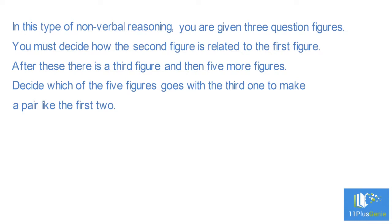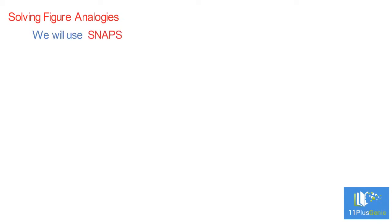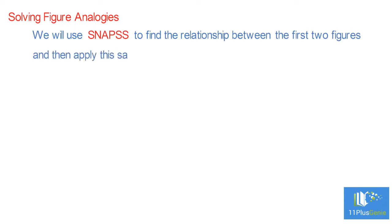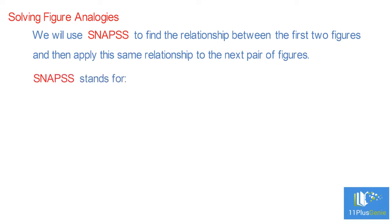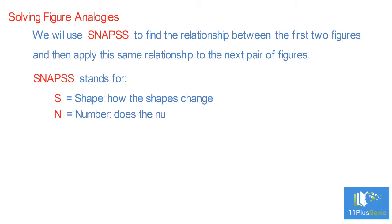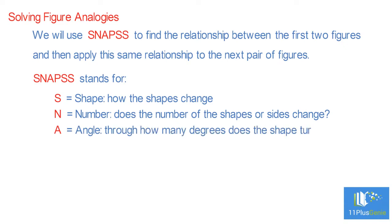To solve figure analogies, we will use SNAPS to find the relationship between the first two figures and then apply this relationship to the next pair. SNAPS stands for: S — Shape, how the shapes change; N — Number, does the number of shapes or sides change; A — Angle, through how many degrees does the shape turn; P — Position, how does the position of the shape change.